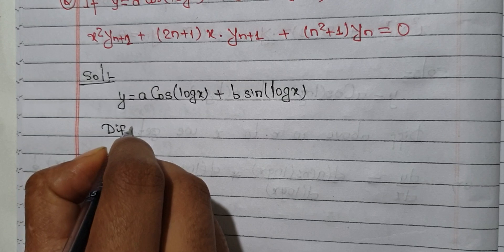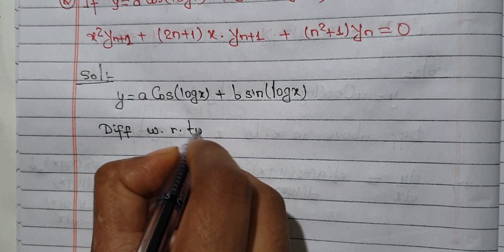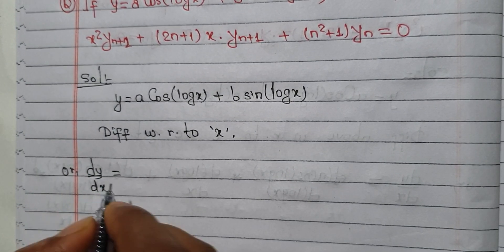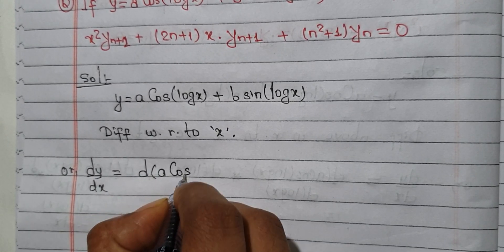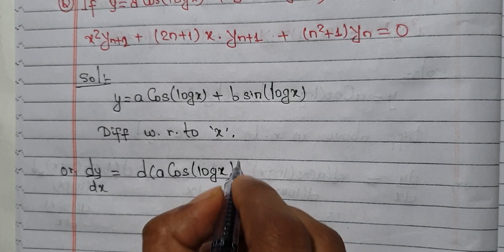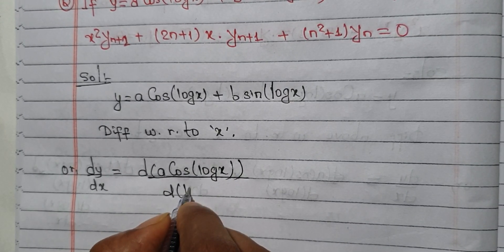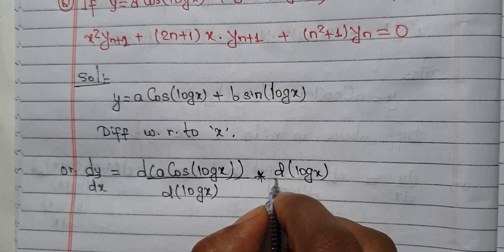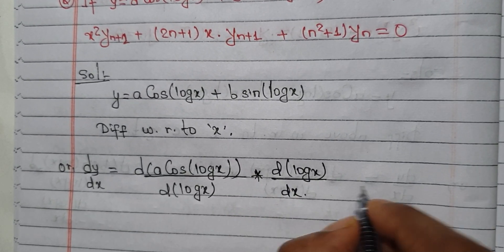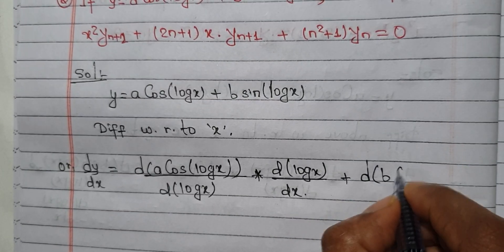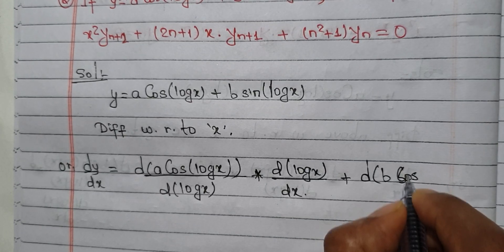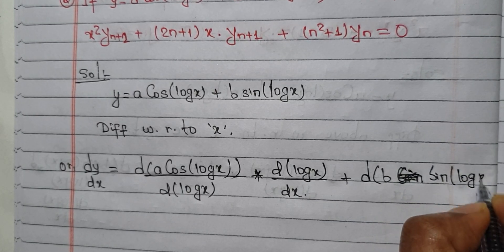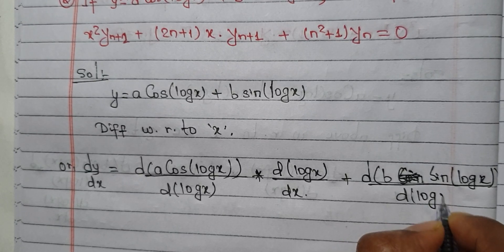We will differentiate with respect to x. dy/dx which is equal to d(a·cos(log x)). This is how we differentiate. Log x is equal to x·t. Then d(log x)/dx, and then d(b·cos·sin(log x)) / d(log x).